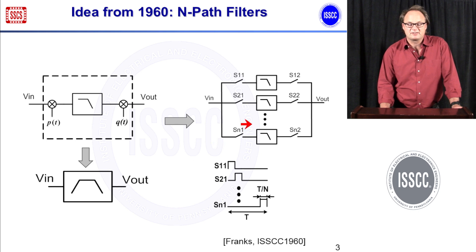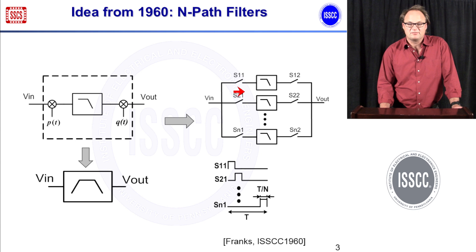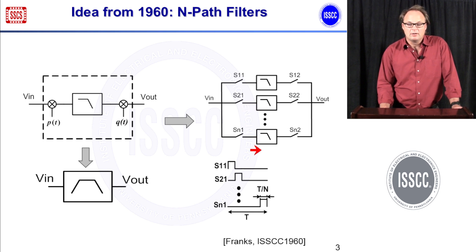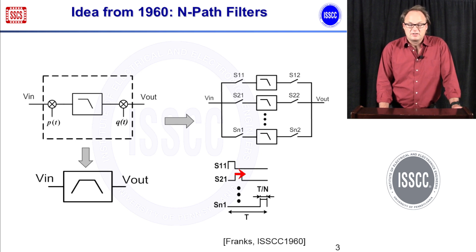Now there is not just one or two but there are N of these paths. The operation works as follows: there's always one of these switches S11 and S12 closed, so one path is conducting, then the next path is conducting, and then the next. There's always one path conducting, and this way the whole branch of low pass filters works as if it were a bandpass filter.